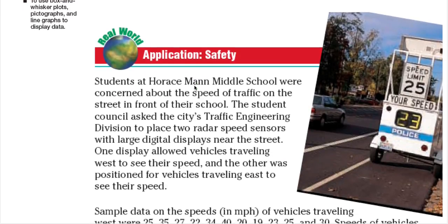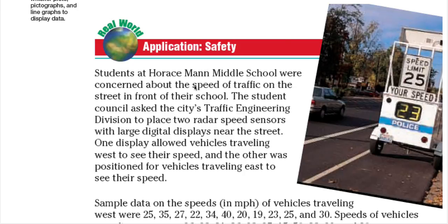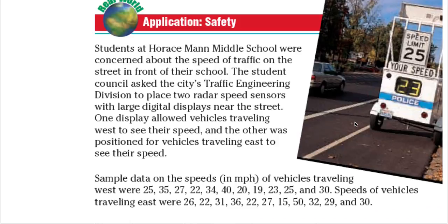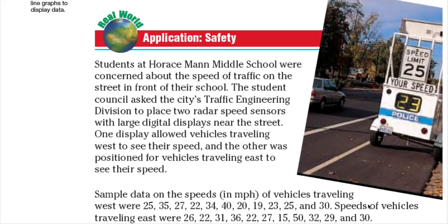Let's take a look at this example. Students at Horace Mann Middle School were concerned about the speed of traffic on the street in front of their school. The student council asked the city's traffic engineering division to place two radar speed sensors with large digital displays near the street. One display allowed vehicles traveling west to see their speed, and the other was positioned for vehicles traveling east to see their speed. The sample speeds in miles per hour of vehicles traveling west were 25, 35, 27, 22, 34, 40, 20, and so on, all the way to 30. And speeds of vehicles traveling east: samples of the speeds are 26, 22, 31, all the way to 30 miles per hour. If you just look at these numbers, they won't make a lot of sense until you organize them.